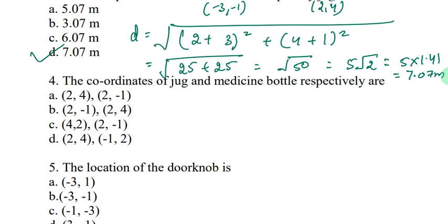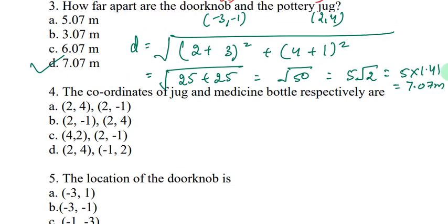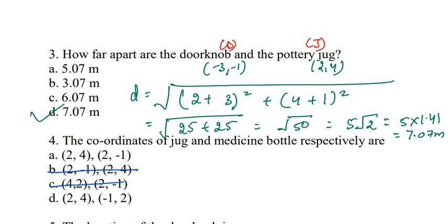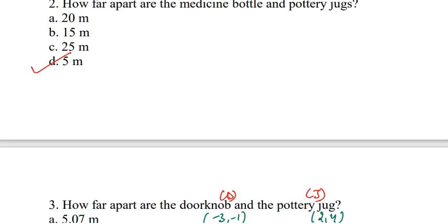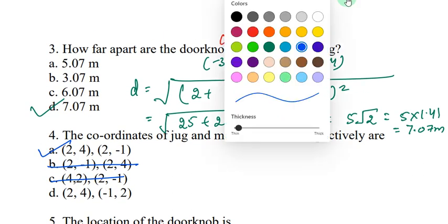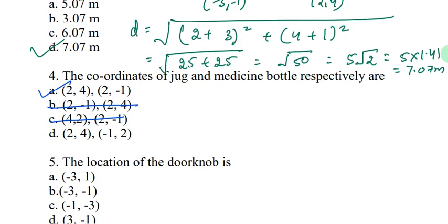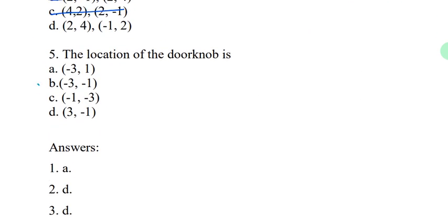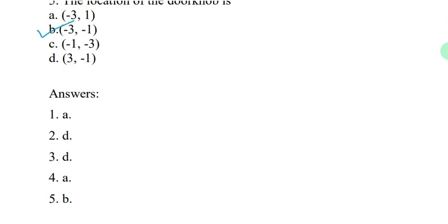The next questions are very simple. The coordinates of jug and medicine bottle. For jug we know it's 2 comma 4, so we're left with only A and D options. What is the medicine bottle? Medicine bottle M is 2 comma minus 1, so the first option is absolutely correct. And the last question: the location of doorknob D is minus 3 comma minus 1. That's option B. These were your correct answers, and the answers are also given below.